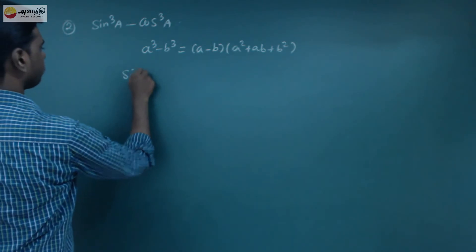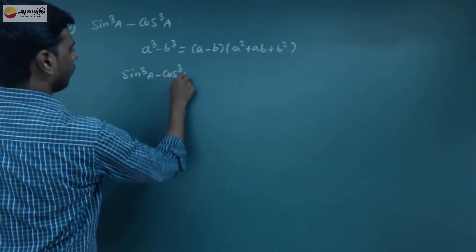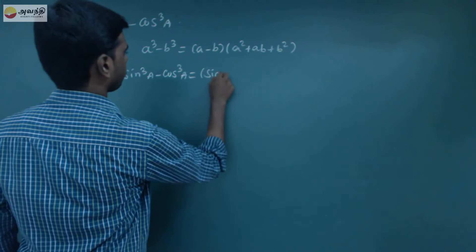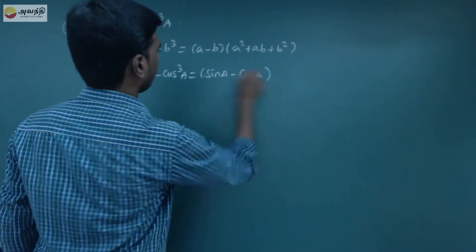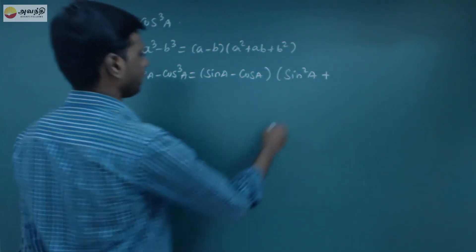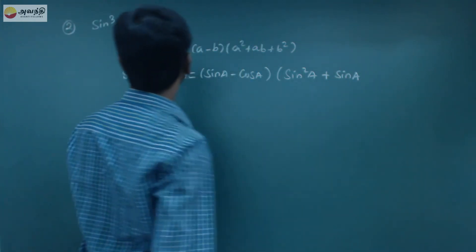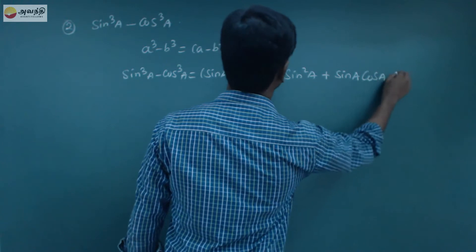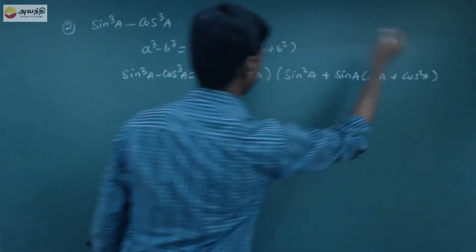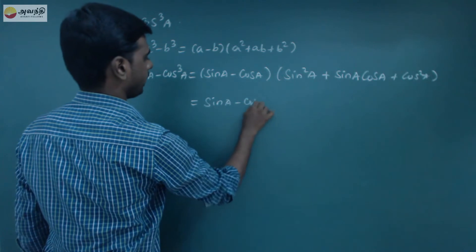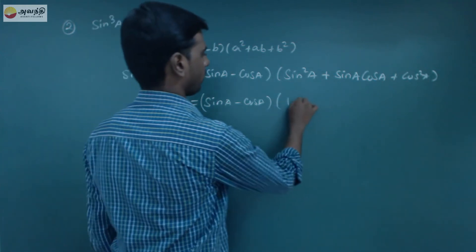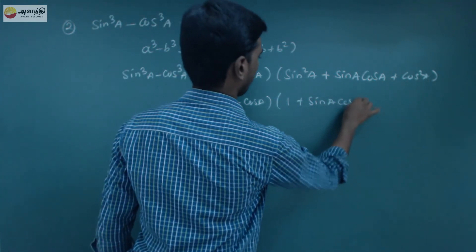So sin cube a minus cos cube a equals sin a minus cos a, into sin square a plus sin a into cos a plus cos square a. Now, sin square a plus cos square a equals 1, so this becomes sin a minus cos a into 1 plus sin a cos a.